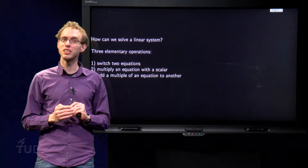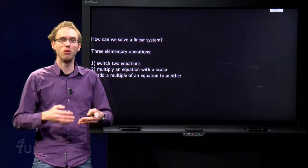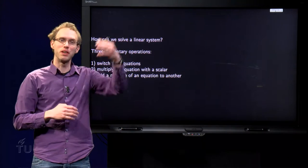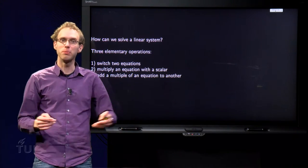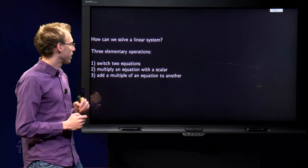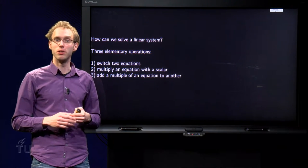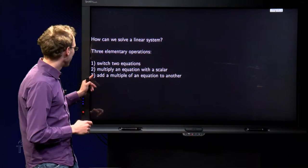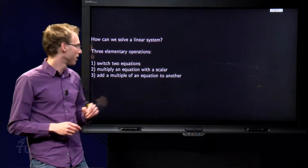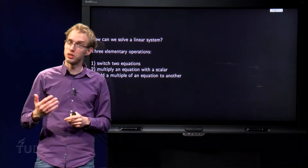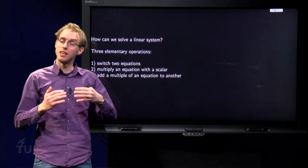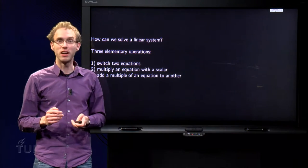We can switch two equations—obviously if we only switch equations from one place to another, the solution will be the same. We can multiply an equation with a scalar, a non-zero number. And the third operation is a bit harder: we can add a multiple of one equation to another. Those three operations leave the linear system invariant.